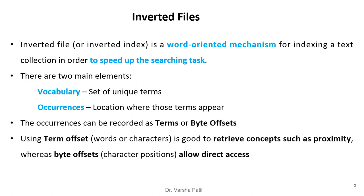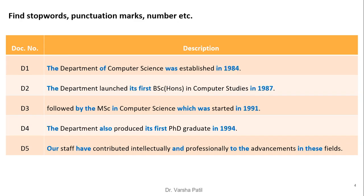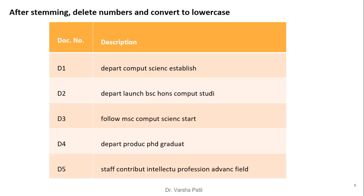All problems are solved with byte offset, but they can easily be solved with term offset also. Exercise one: five documents are given with their description. To solve the problem we require to find out the stop words, punctuation marks, and numbers, because generally we don't make inverted file indexing on these words. In all five documents, stop words, punctuation marks, and numbers are represented in blue.